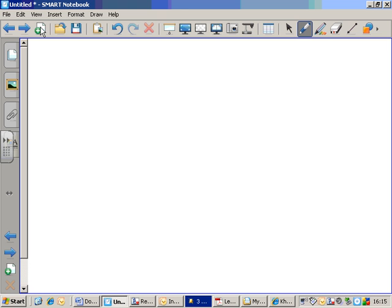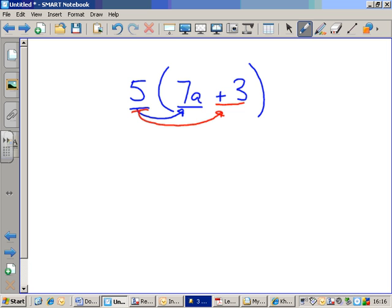Let's do a few more. Here, we've got five, open brackets, seven A, plus three, close brackets. It's multiplying five by whatever's in the brackets. Five times seven A, and five times plus or positive three.